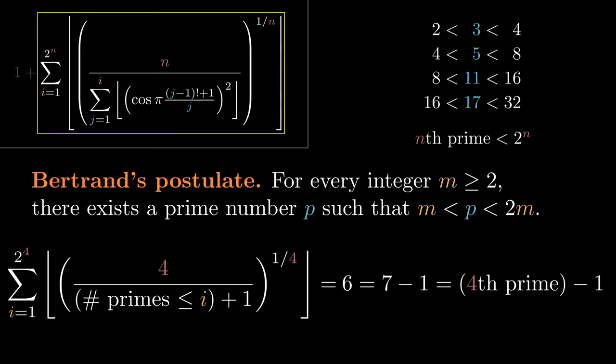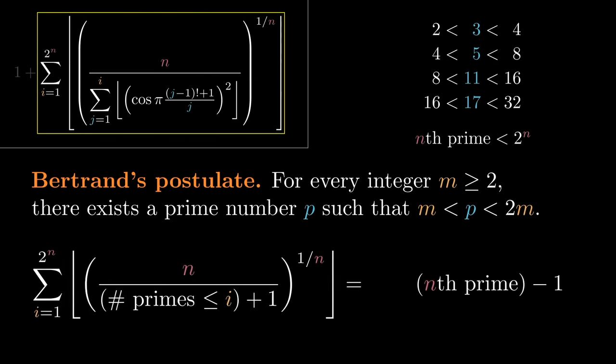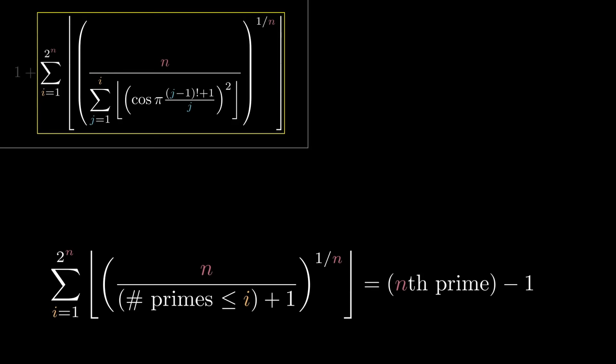In reality, the nth prime is far less than 2 to the n, but by now it's pretty clear that Willans wasn't overly concerned with efficiency. So the sum up to 2 to the n is guaranteed to include all values of i that are less than the nth prime. Therefore, in general, this sum is 1 less than the nth prime. This is why the very last step is to add 1. And there it is! We have a formula for the nth prime number.